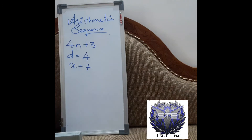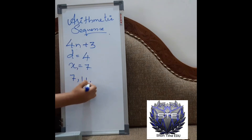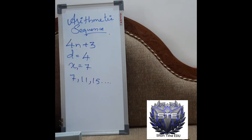How do we write the sequence from the first term? Starting at 7, we add the common difference 4 each time: 7, then 7 plus 4 is 11, then 11 plus 4 is 15, and it continues like that. So the sequence is 7, 11, 15, and so on.